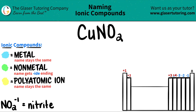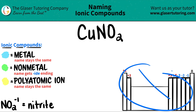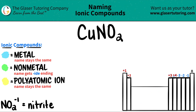In this case we have three elements: Cu for copper, N for nitrogen, and O for oxygen. It's always easiest to find where the polyatomic ion is and then work from there. Keep in mind that polyatomic ions are never going to be on the periodic table — you have to memorize those.